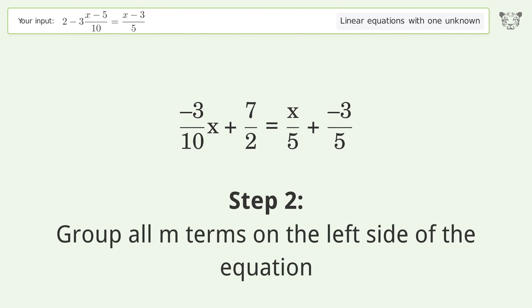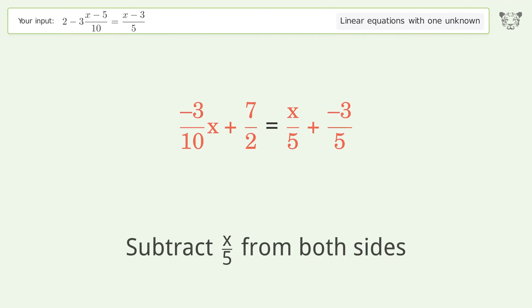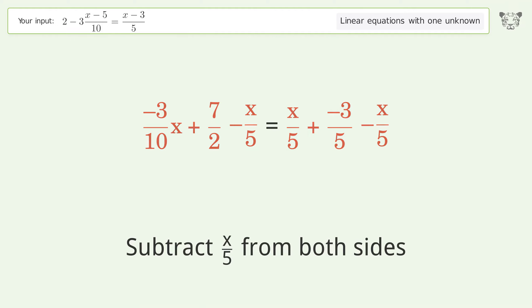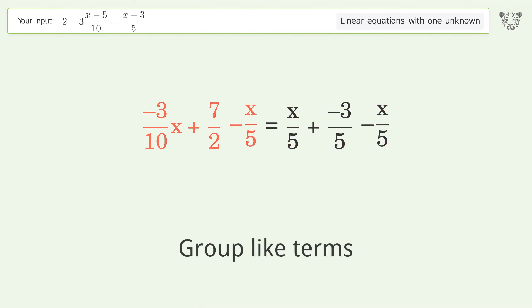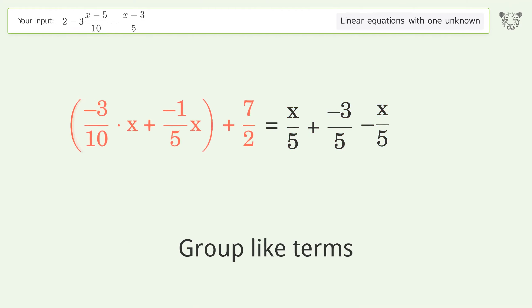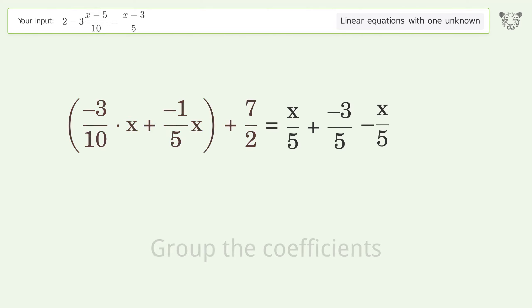Group all m terms on the left side of the equation — subtract 10 over 5 from both sides. Group like terms. Group the coefficients.